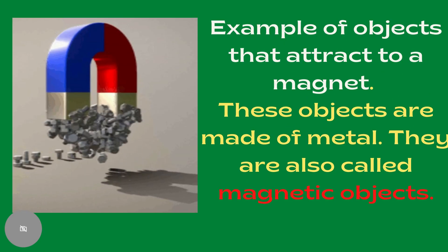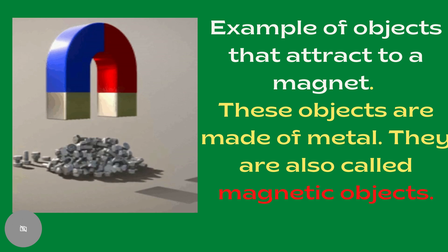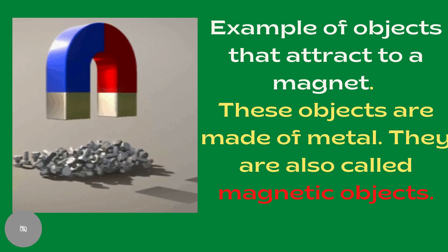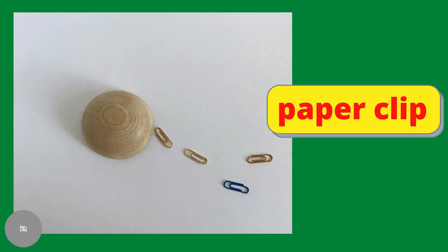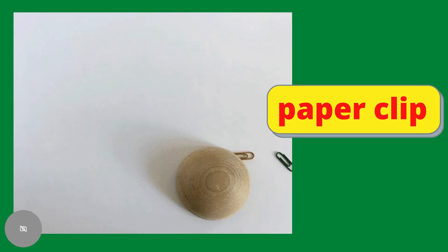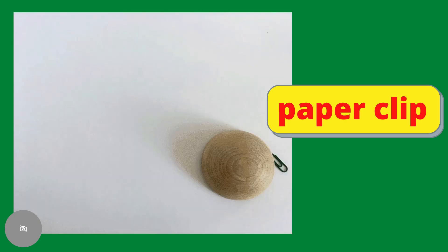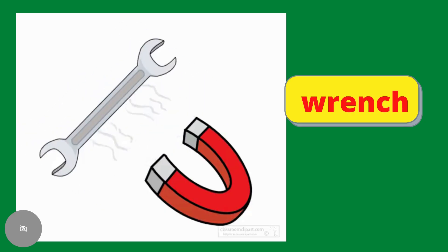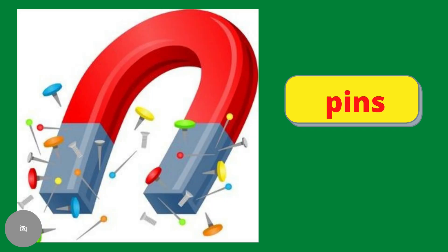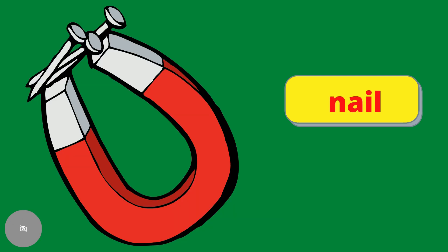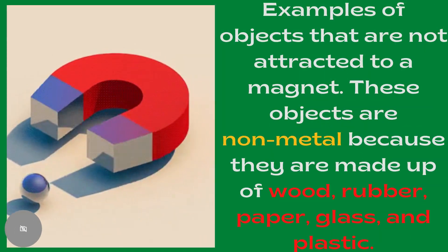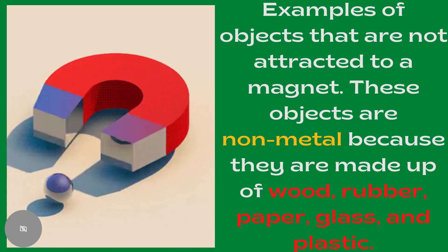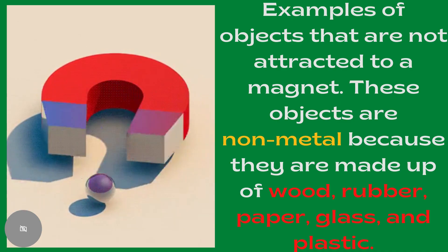Here are examples of objects that are attracted to a magnet. These objects are made of metal; they are also called magnetic objects. Examples include: paper clip, wrench, pins, and nail.